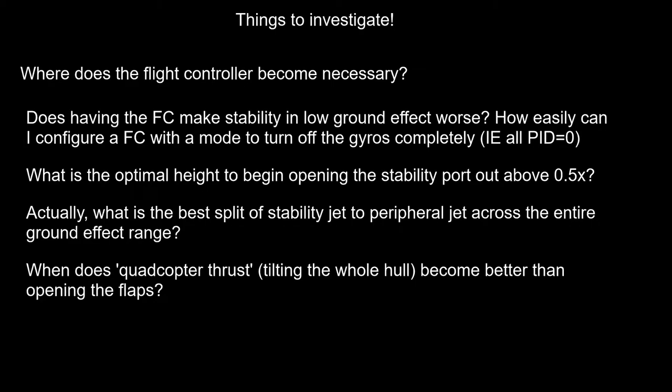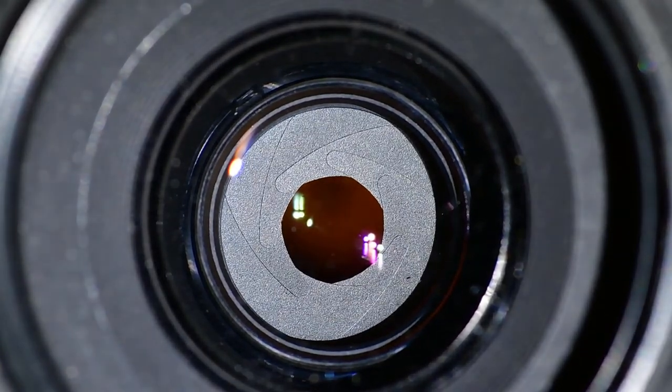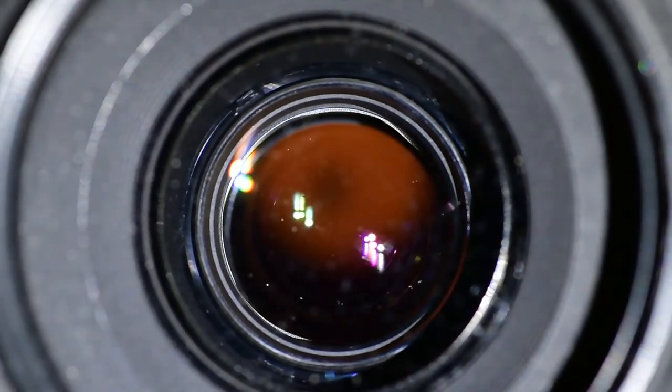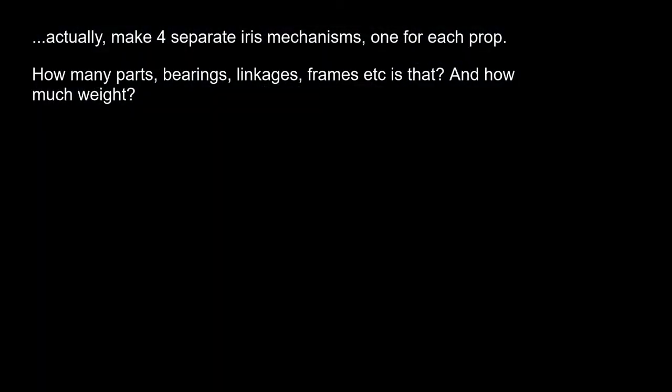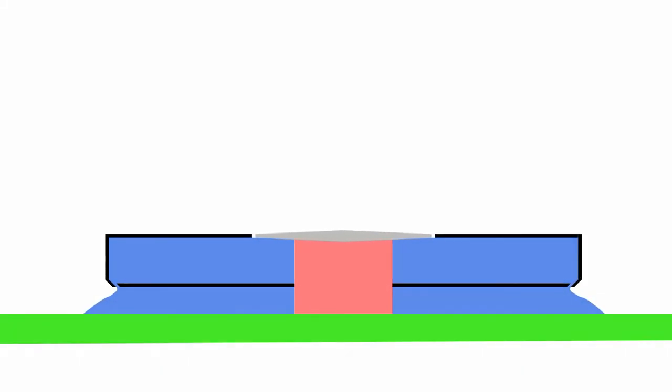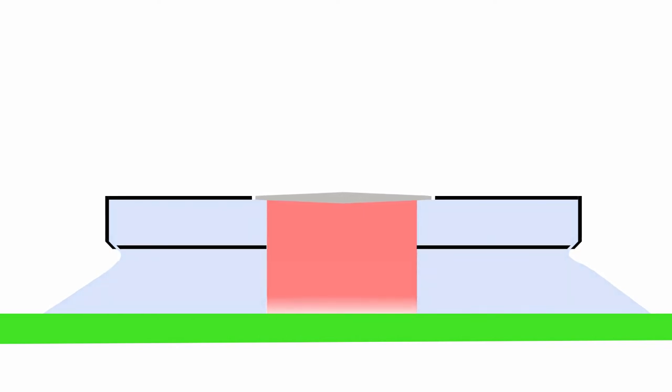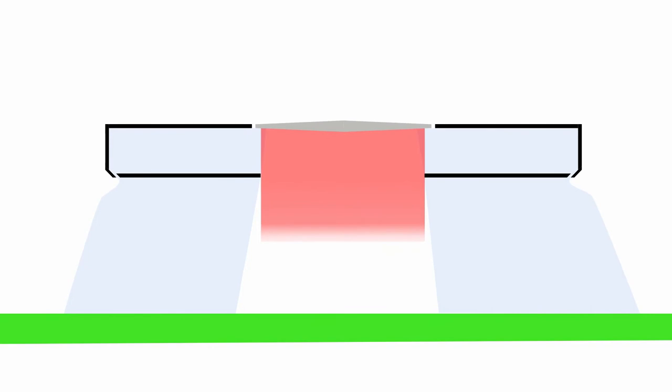Another interesting topic is how mechanically to achieve this. The way I've drawn it implies an iris mechanism - just open up those stability ports. But the difference between nice pretty animation and CAD and something that can be built easily can be pretty big. It's not how to make an iris mechanism, I've got a 3D printer, I'm sure I can design something. It's how to make an iris mechanism that isn't incredibly heavy, fragile, prone to binding up, etc. I have a few other ideas swirling which will be in the next video. Certainly the idea of controlling that airflow between the peripheral jet and stability jet is what's important here.